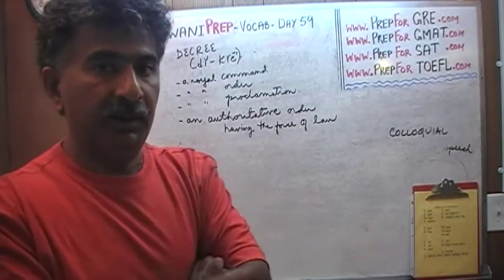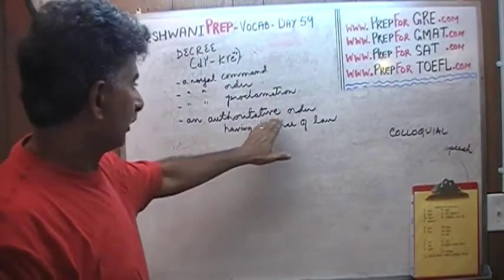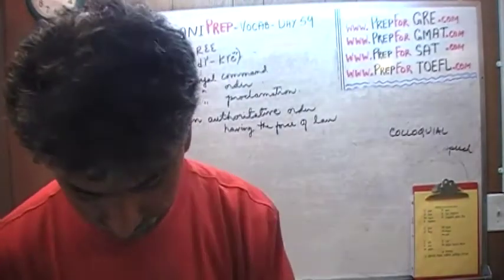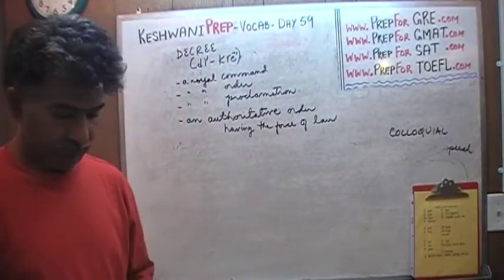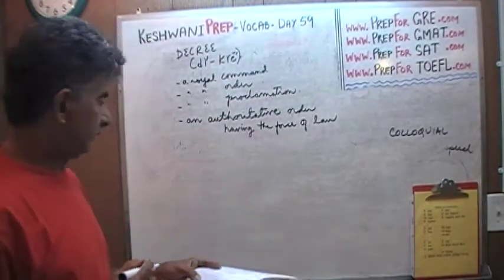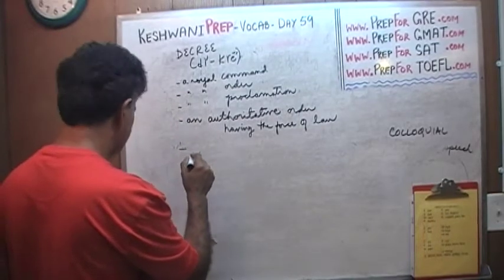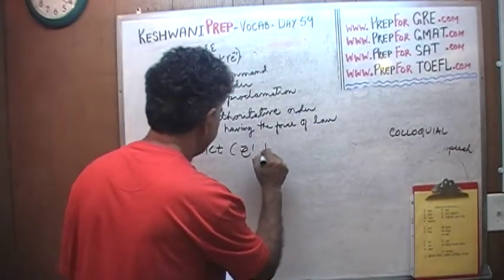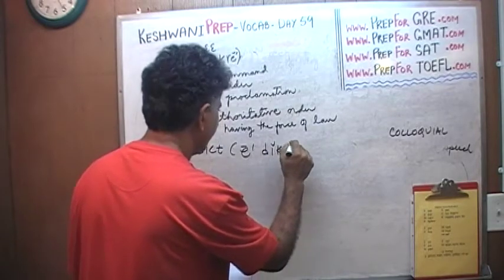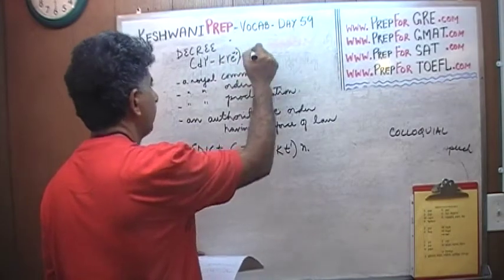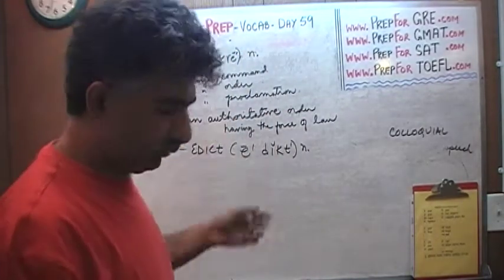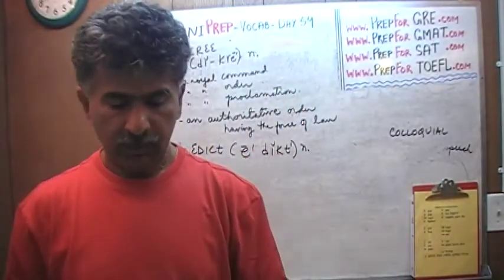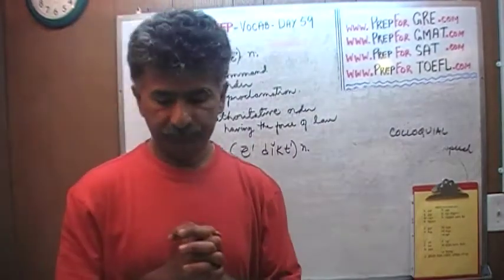A decree doesn't have to be a royal command — it could be a command by a dictator or any authority. It is an authoritative order having the force of law, because when the decree is issued it becomes law. A synonym of decree is edict — a formal proclamation or command issued by a governing body having the force of law.